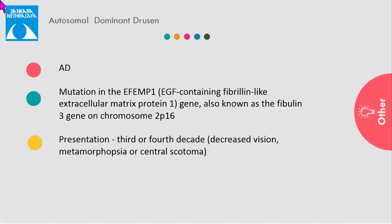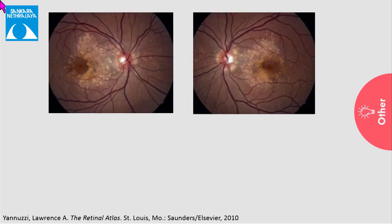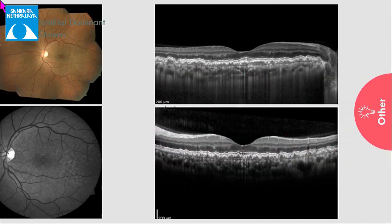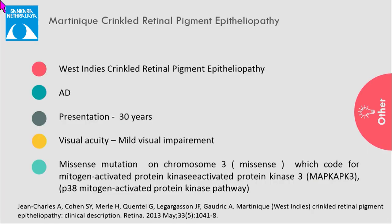Autosomal dominant drusen is caused by a mutation in the Fibulin-3 gene on chromosome 2. The presentation is generally in the third to fifth decade with decreased vision and metamorphopsia. The classical findings include large honeycomb-shaped drusen occupying the posterior pole, as well as, in some patients, radial drusen which are hyperfluorescent and on OCT are seen in the sub-RPE region.